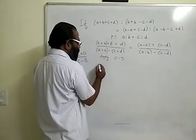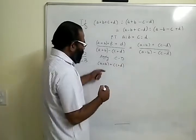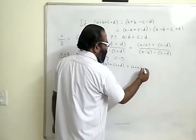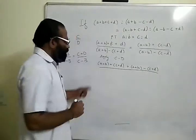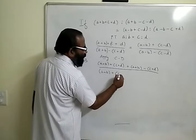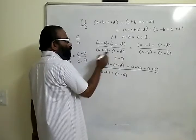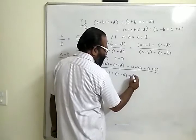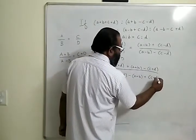So a plus b plus c plus d, the top part, plus the bottom part: plus a plus b minus c plus d. Now minus of this bottom part. So when I do minus of the whole thing, this part becomes minus and c plus d becomes plus. So minus a minus b plus c plus d.